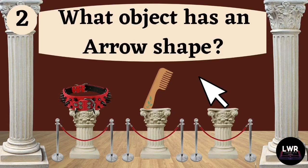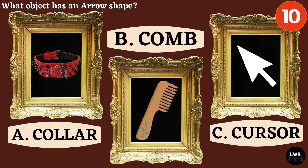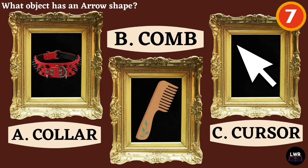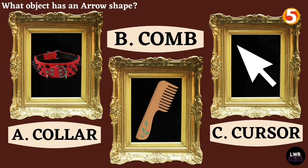Question number two. What object has an arrow shape? Letter A, collar. Letter B, comb. Or letter C, cursor.